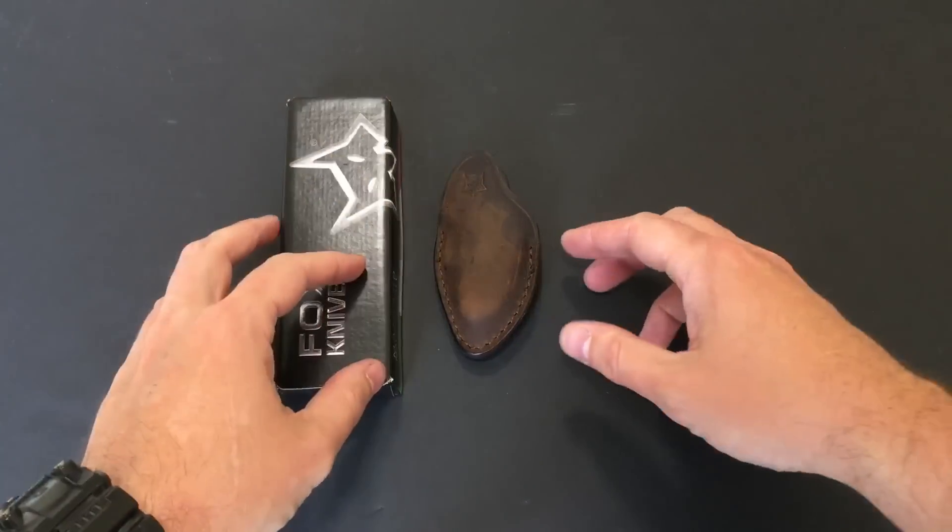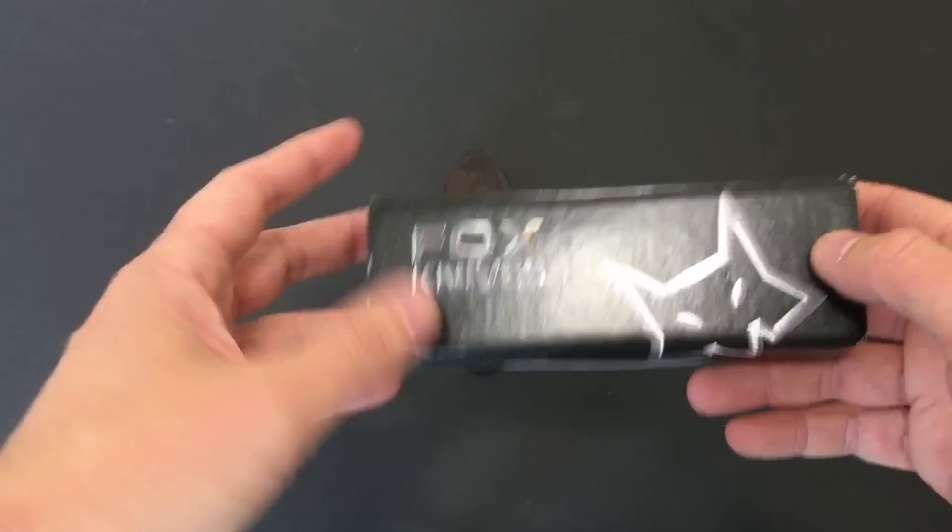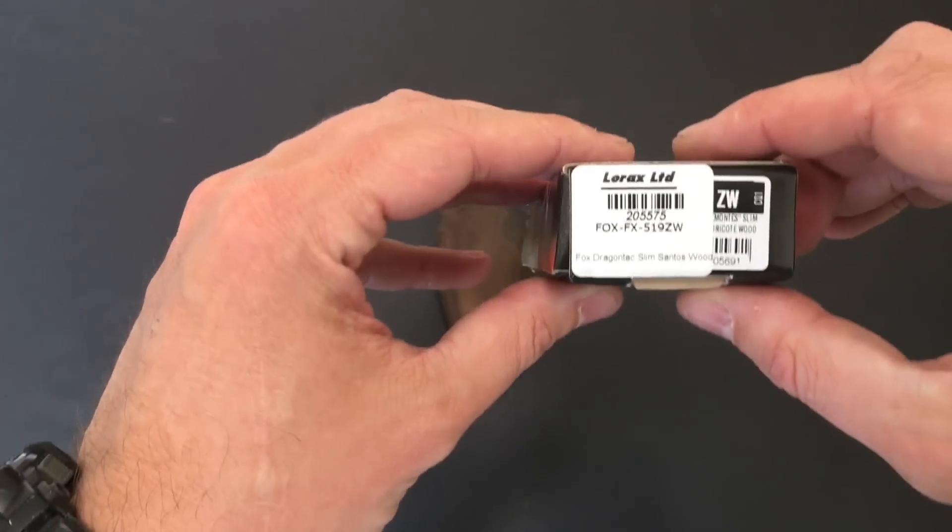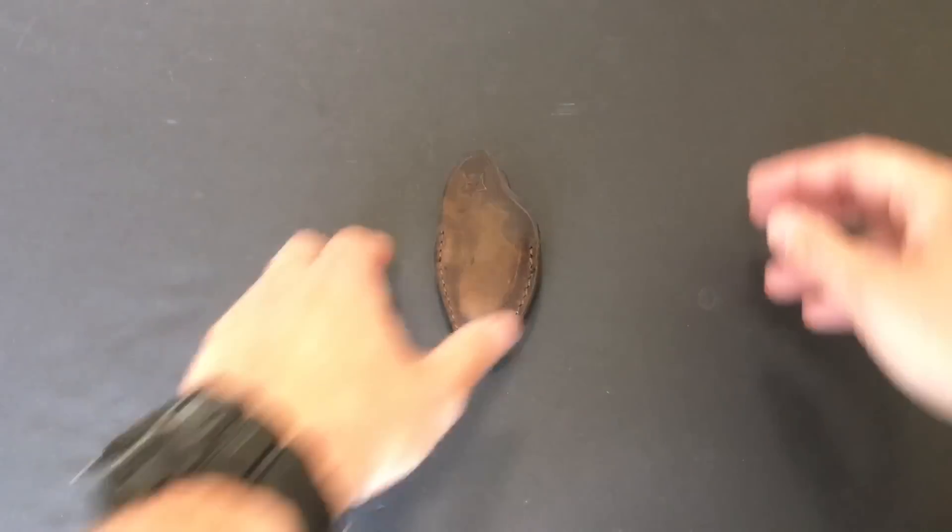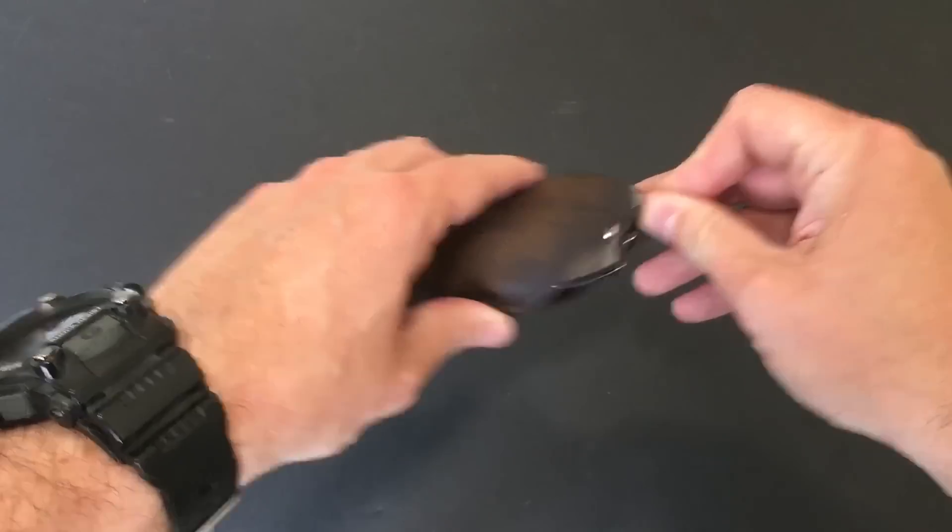Hello everyone, Heinnie Haynes, showing the scale from Fox Knives today. We have one which they call the Dragon Tag and this is the Slim Santos wood version, the small one.